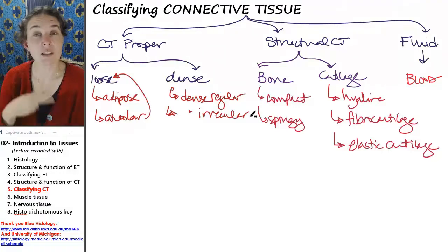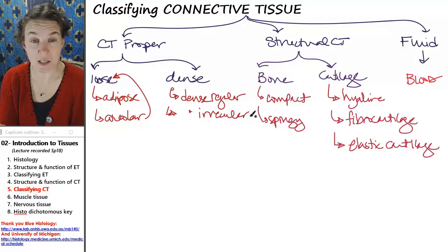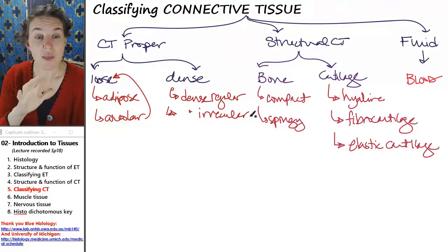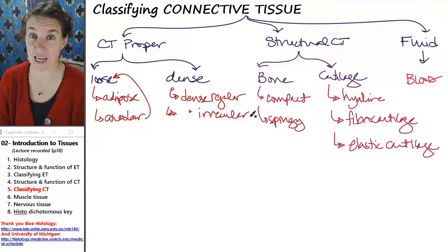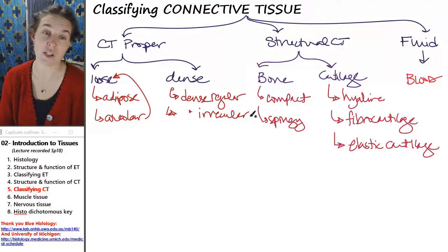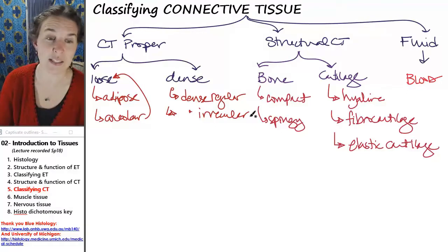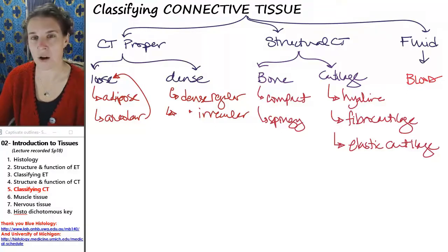Now, our last two tissue types, muscle and nervous tissue, we're not going to break it up because the functions and the structures and the different types, they're not nearly as complicated as epithelium or connective tissues. Connective tissues are the craziest. So let's look at our last two, muscle and nervous tissue, muscle first.